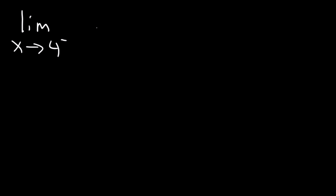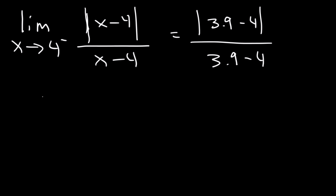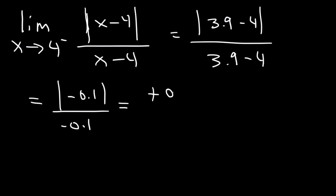What is the limit as x approaches 4 from the left of the absolute value of x minus 4 over x minus 4? Let's plug in a number less than 4, like 3.9. Then 3.9 minus 4 is negative 0.1, and the absolute value of negative 0.1 is positive 0.1. So positive 0.1 divided by negative 0.1 gives us negative 1.